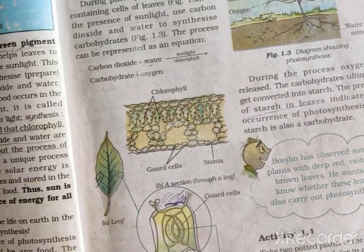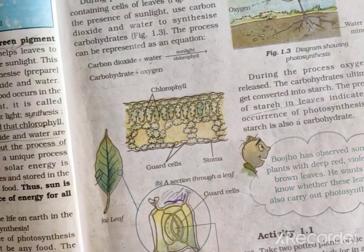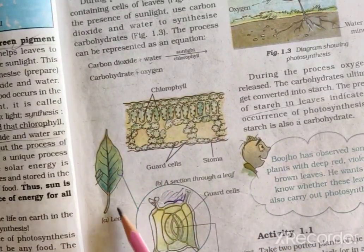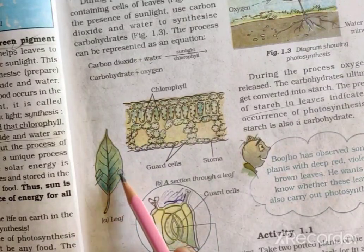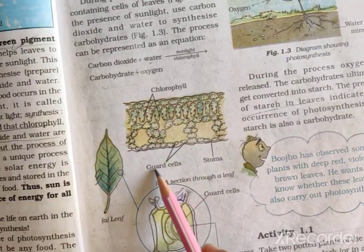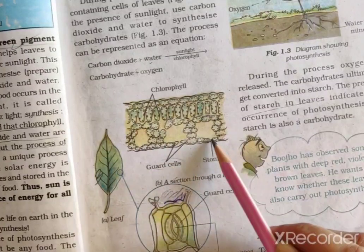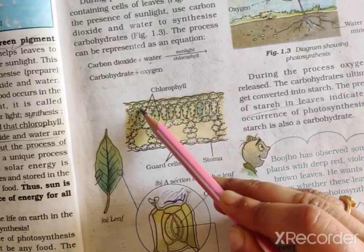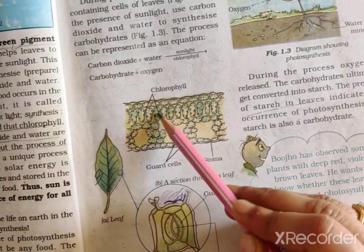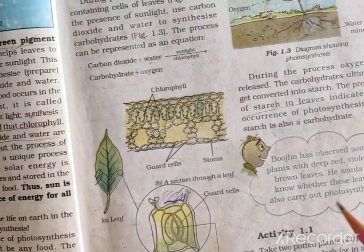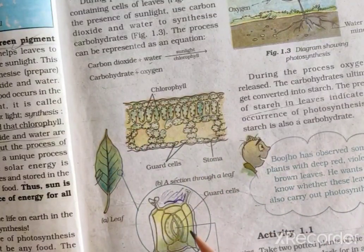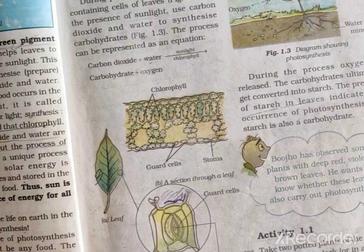Now see this figure — this is the stomata. As I told you, stomata are very small pores in the leaves. When we zoom into the leaf, you can see the guard cells and the stomata. These dots are chlorophyll. When we zoom further into the stomata, you can see guard cells and the stomata opening.